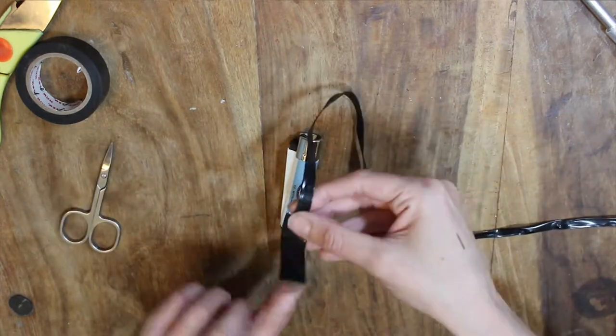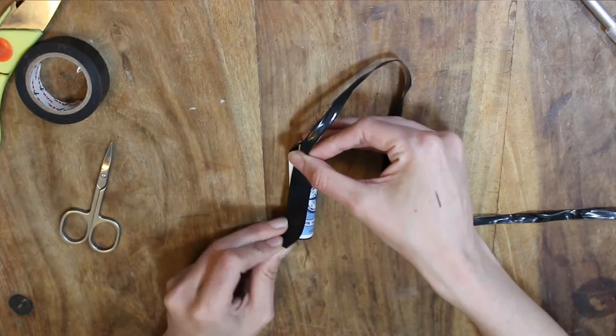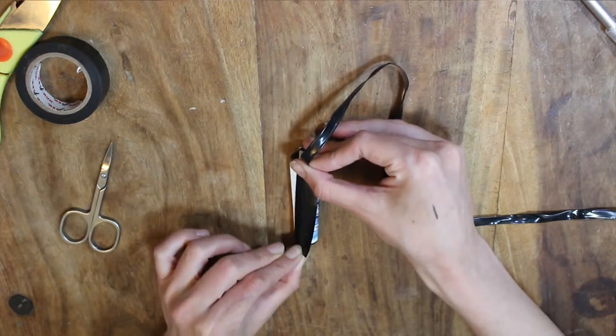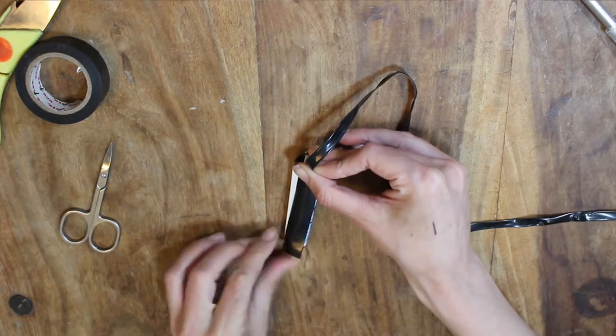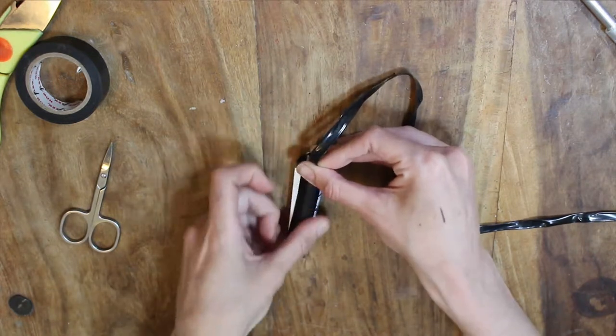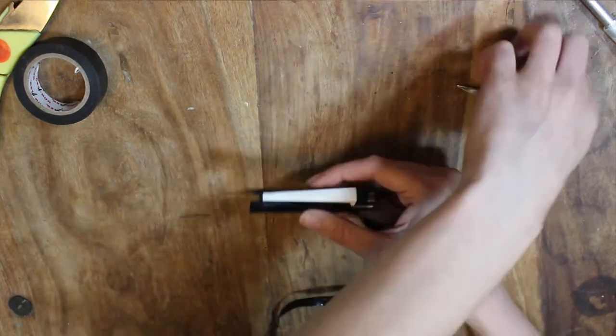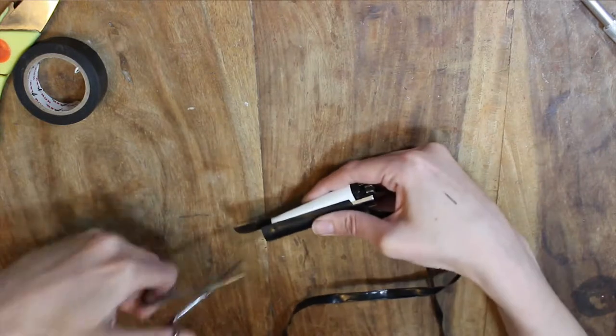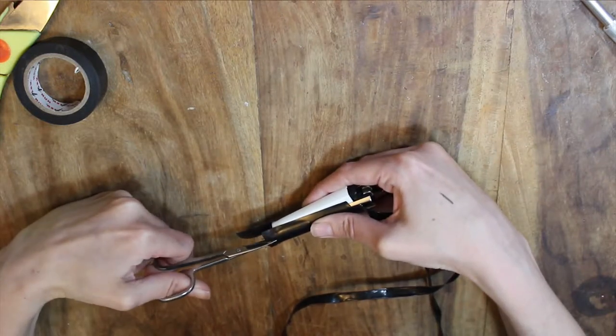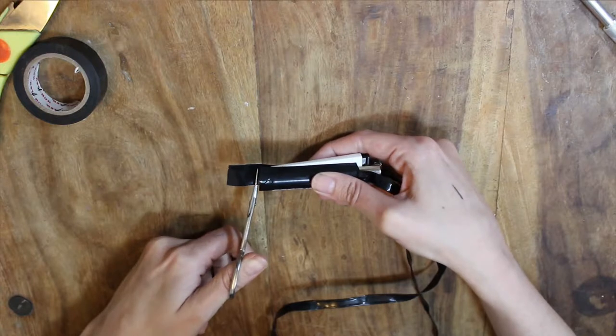Once you're done, stick the two bits that are still sticky along the sides of the lighter so they're touching up against that protruding part where the gas button is. Trim off any excess tape, and I like to leave maybe half a centimeter at the end to wrap under the lighter just so it's a bit more secure.